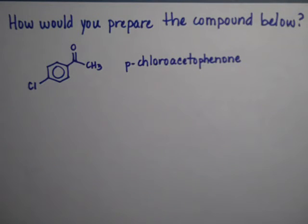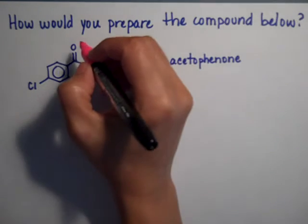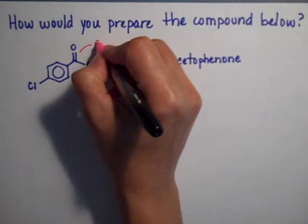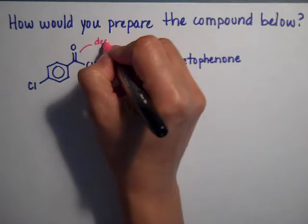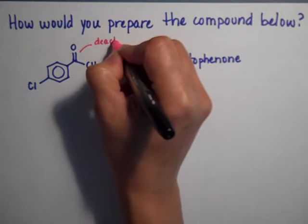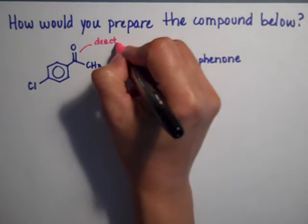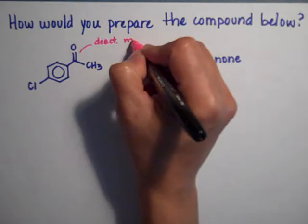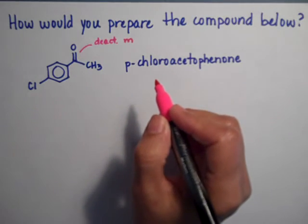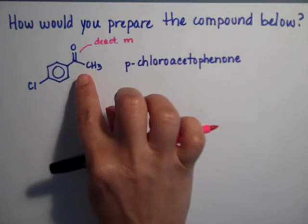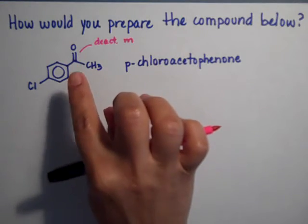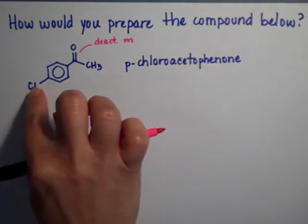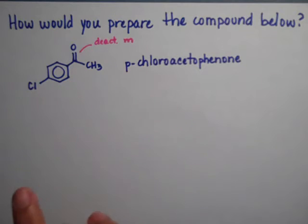I'm going to analyze both of them. The carbonyl is a deactivating group and this type of deactivating group is meta-directing. So the carbonyl was not on the ring first because I don't have the chloro on the meta position.